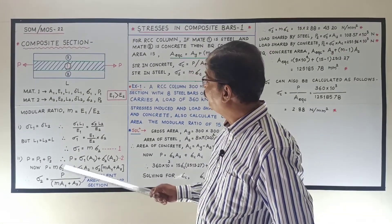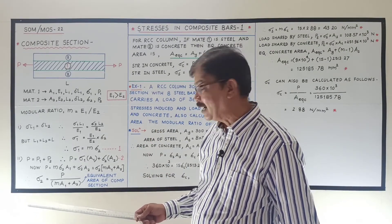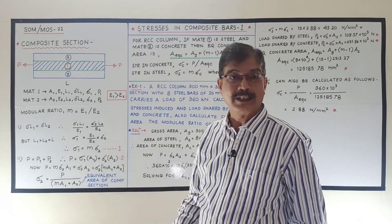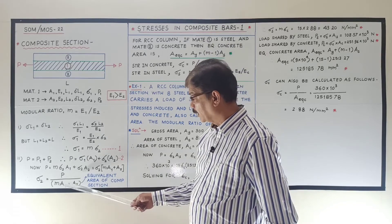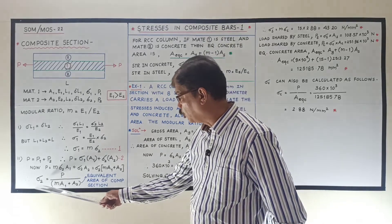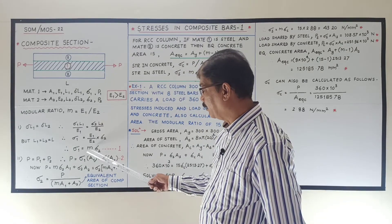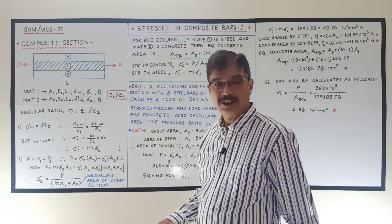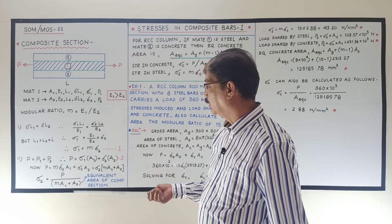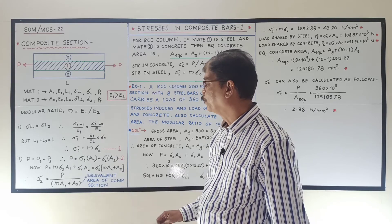The quantity (M A1 plus A2) is known as the equivalent area of the composite section — that is, the area that would be needed if only one material were used. This is the second method by which sigma 2 can be found directly. Once sigma 2 is calculated, multiplying by M gives sigma 1, and from both stresses the load shared by each material as well as the deformation can be determined.